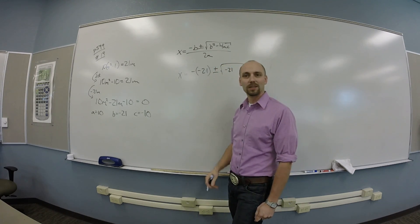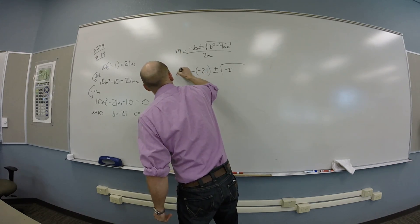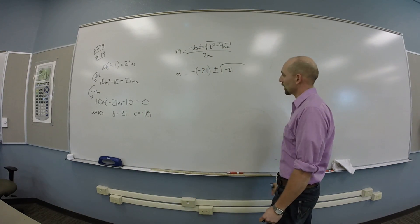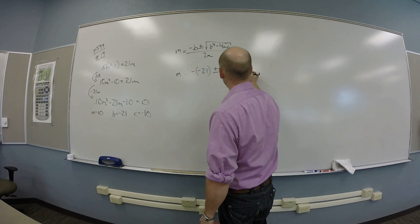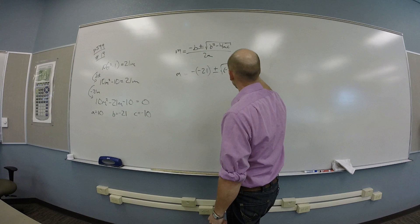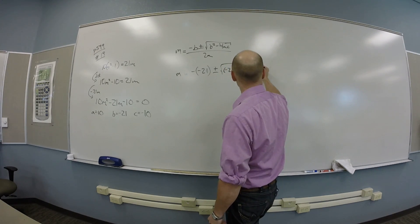Yeah. Okay. So I got negative 21 squared minus 4 times 10 times negative 10, 10 times negative 10. Oh, that's going to be a really big number. And you lost a negative, didn't you?